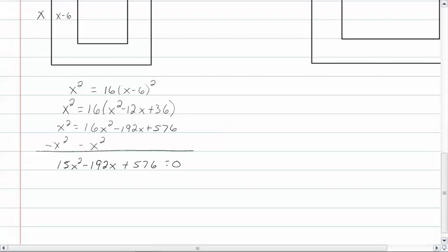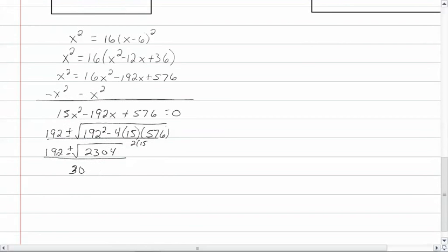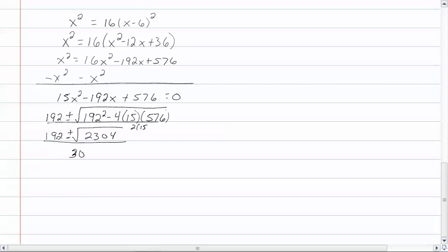Now we're going to throw this into our quadratic formula. So we have a hundred and ninety-two plus or minus the square root of a hundred and ninety-two squared minus four times fifteen times five hundred and seventy-six. So we get a hundred and ninety-two plus or minus the square root of twenty-three or four. I see I forgot my fifteen under here. Two times fifteen, which is thirty.